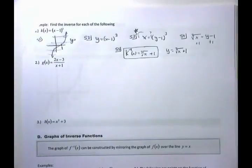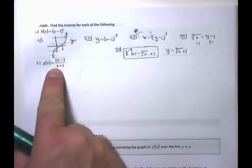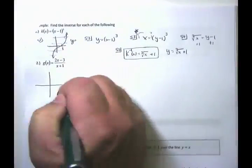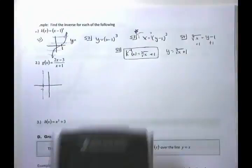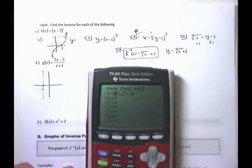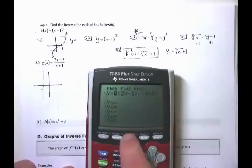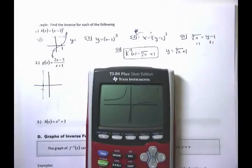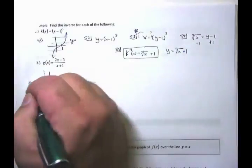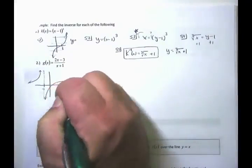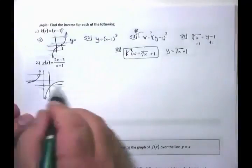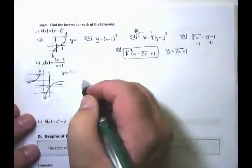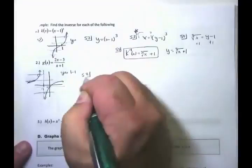Put a big star by this next problem — you always see it on the test and final exam. Same directions: find the inverse. The function is g(x) = (2x − 3)/(x + 1). This has a vertical asymptote at x = −1. Graphing it on the calculator with zoom 6 gives a graph similar to the previous one. The question: is it one-to-one? Any horizontal line intersects it only once, so yes — once again, it is one-to-one.